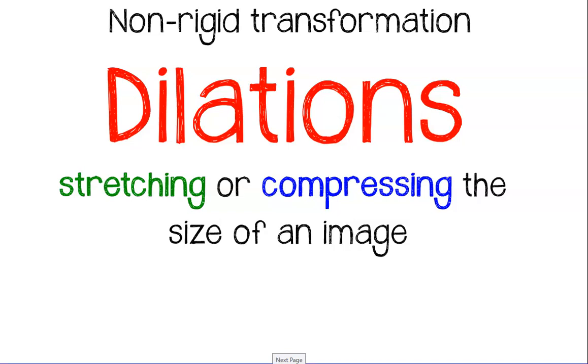In this tutorial, we'll learn about a non-rigid transformation called a dilation, which is a stretching or compressing of the size of an image. You can call it stretching, enlarging, or making bigger of a shape, or you can call it compressing, reducing, shrinking, or making smaller of a shape. This is not a rigid transformation, which means that the shapes will not be the same size.